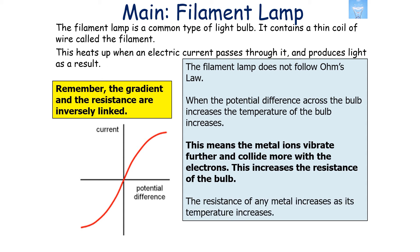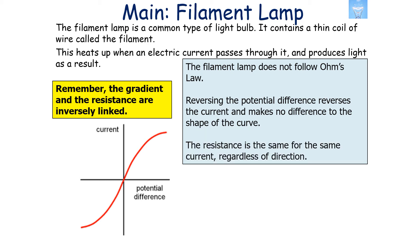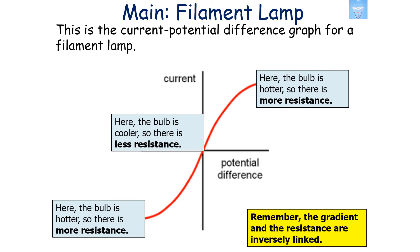The resistance of any metal increases as its temperature increases. The filament lamp does not follow Ohm's law because it's not a straight line graph. Reversing the potential difference reverses the current but makes no difference to the shape of the curve, because in this component the resistance is the same for the same current regardless of direction. In the centre of the graph, the bulb is cooler, so there is smaller resistance and a steeper line.